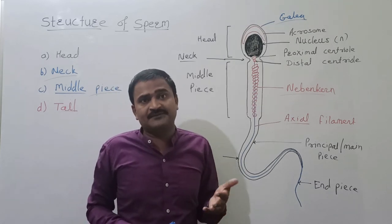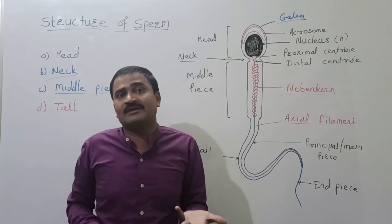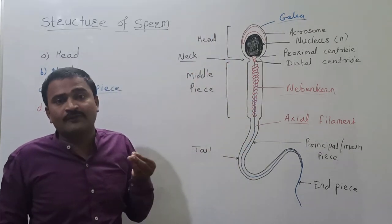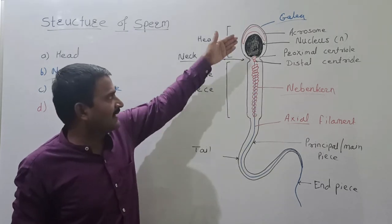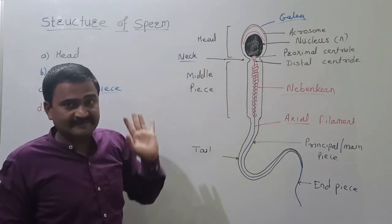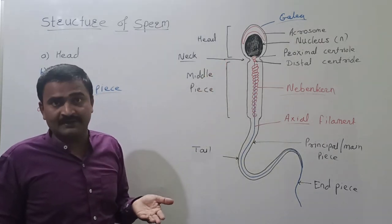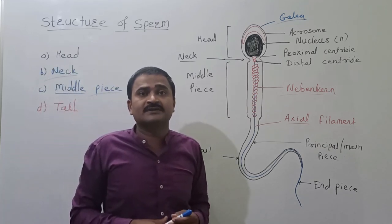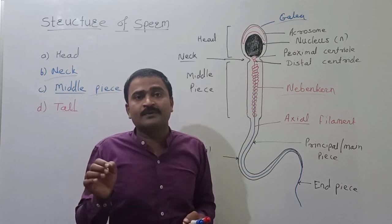During ejaculation, millions of sperms are released, of which only one is used for fertilization. This is about the structure of the male gamete. In the next lecture, we will discuss the structure of the unfertilized egg, or the female gamete.